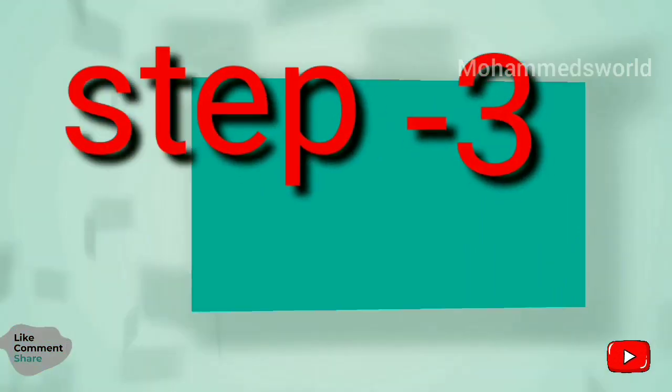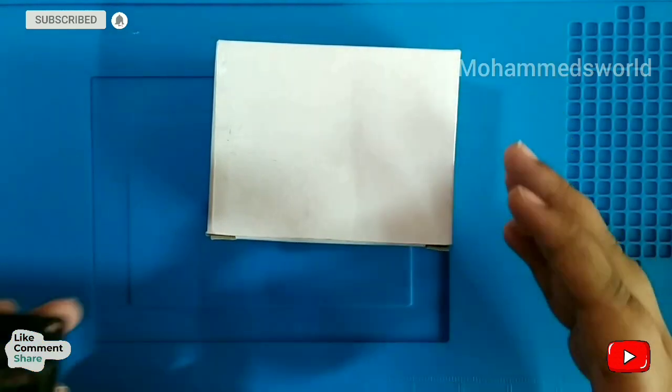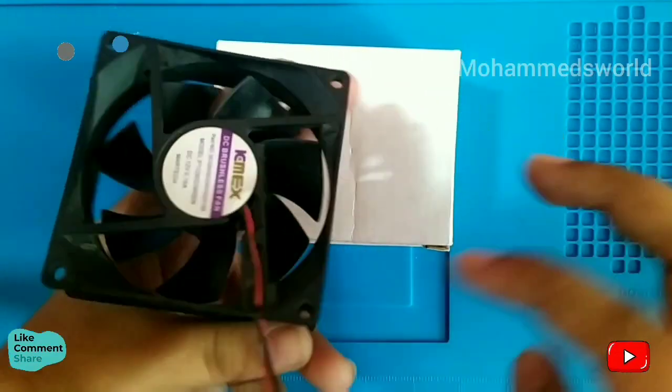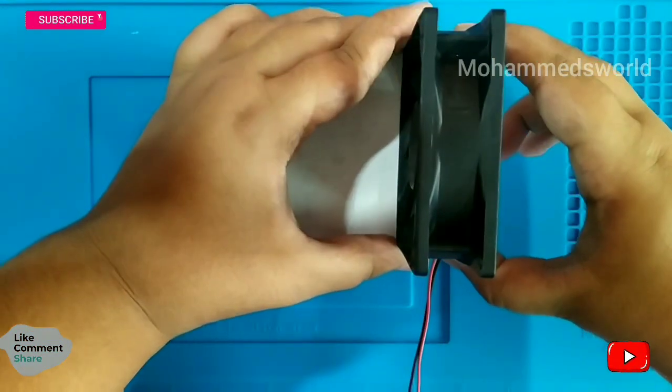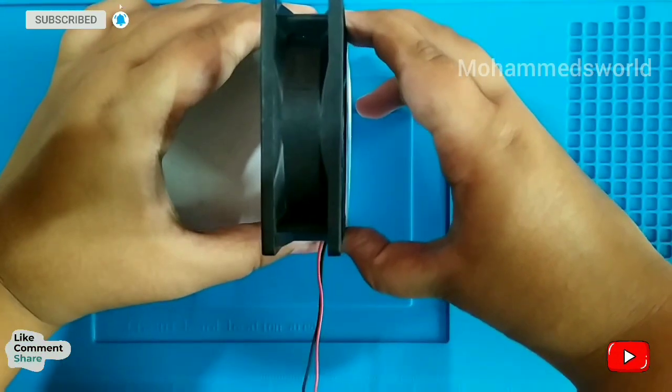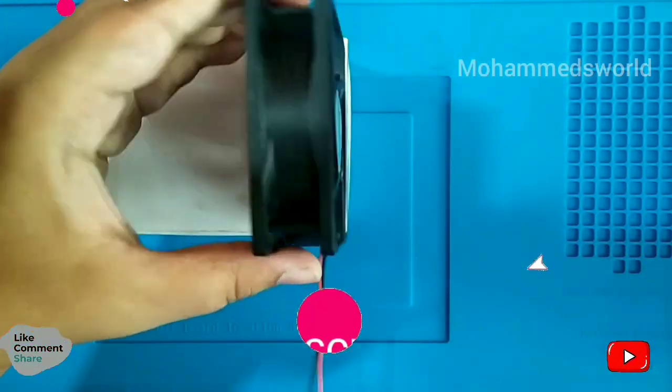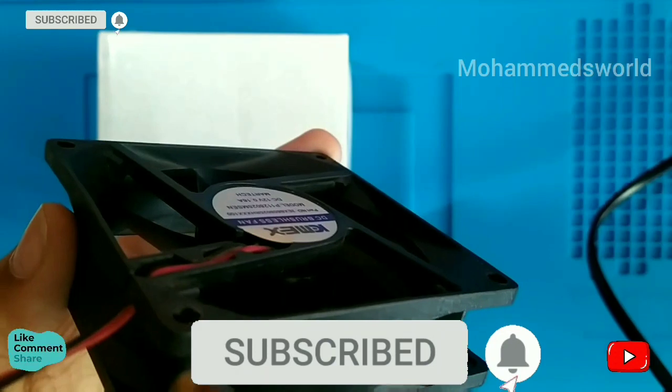Step 3: In step 3, we are going to stick 12 volts DC fan on the cardboard box as you can see in the video.